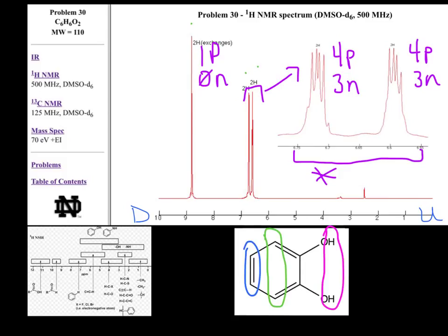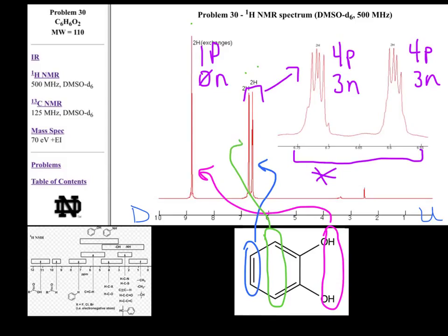Comparing our structure to the NMR spectra, we see three different types of hydrogens in three different environments. The hydrogens circled in pink see no neighbors and experience significant de-shielding because they are attached to electronegative oxygens, corresponding to the most downfield signal. The hydrogens circled in blue experience the least de-shielding because they are furthest from the oxygens, corresponding to the most upfield signal. The hydrogens circled in green experience de-shielding in the middle and correspond to the middle signal.